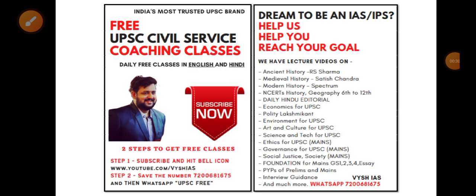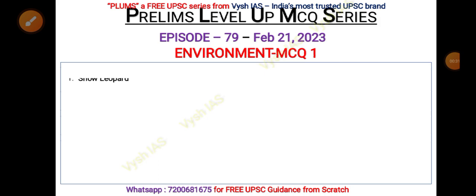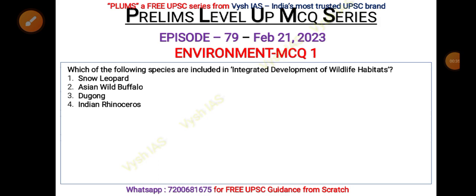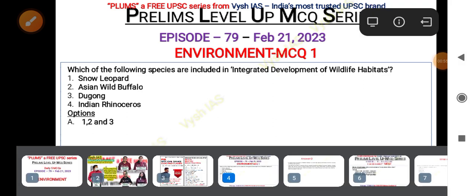Be consistent, guys. Now let us begin the first MCQ. Which of the following species are included in the program called Integrated Development of Wildlife Habitats? The species named in the options are snow leopard, Asian wild buffalo, dugong, and Indian rhinoceros.